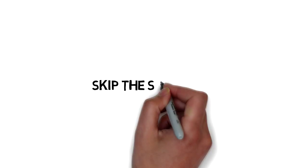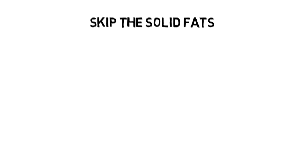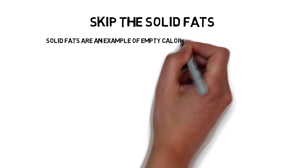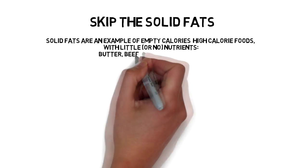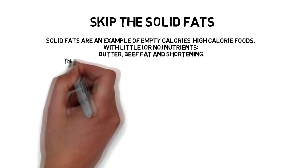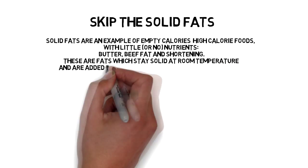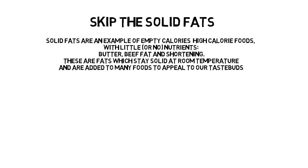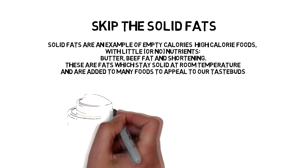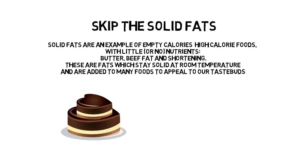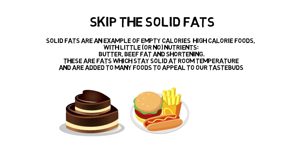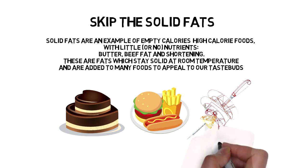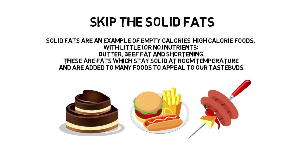Skip the solid fats. Solid fats are an example of empty calories — high-calorie foods with little or no nutrients — like butter, beef fat, and shortening. These are fats which stay solid at room temperature and are added to many foods to appeal to our taste buds, as well as occurring naturally in some foods. For example: cakes, cookies, cheese, pizza, and bacon.